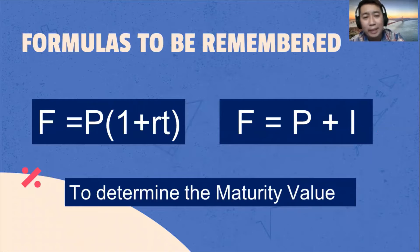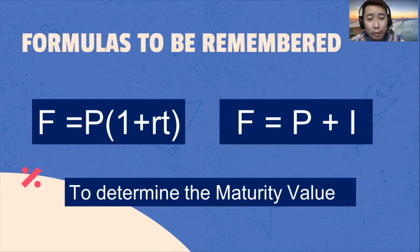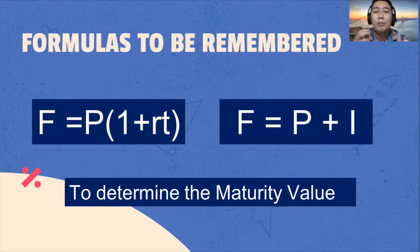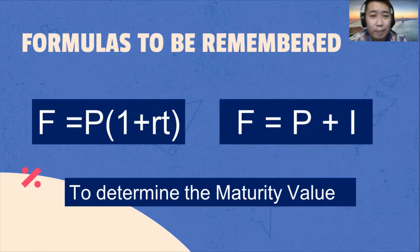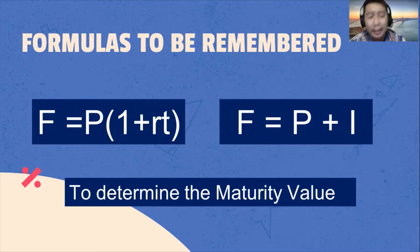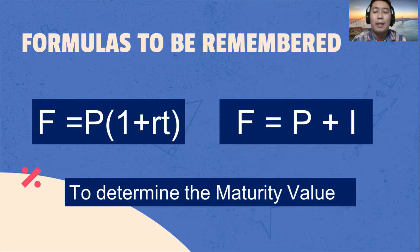Here are the possible formulas we can use to determine the maturity value. That is: final value or maturity value is equal to the principal amount multiplied by the quantity of one plus the product of rate times time. Or, as simply stated, maturity value is equal to the principal amount plus the interest.